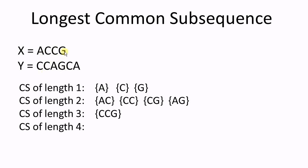x has a, g — y has a, g. Next, let's find the common subsequence of length 3. x has a, c, c — y doesn't have a, c, c. x has c, c, g — y also has c, c, g. So the common subsequence of length 3 is c, c, g.